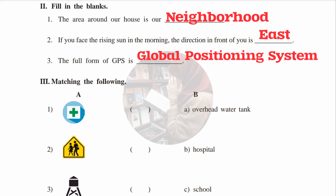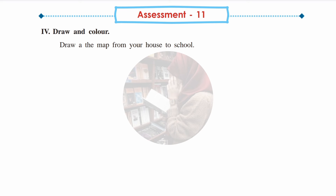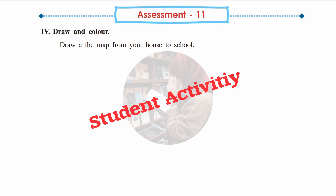Third section, match the following: symbols are in the first column and their names in the second. First symbol is hospital — answer B. Second symbol is school — answer C. Third symbol is overhead water tank — answer A. Fourth section is a student activity — draw a map from your house to school, showing your house, your school, and the route.